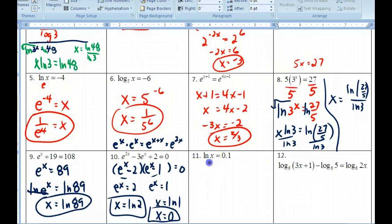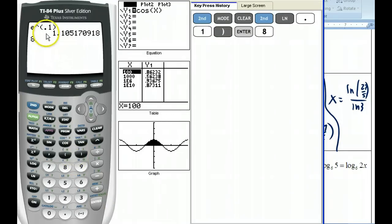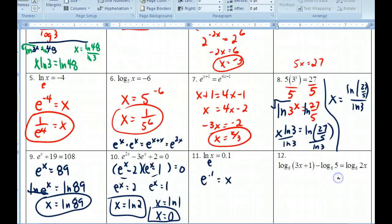This one here, I'm going to rewrite this in exponential form. So this would be e to the 0.1 equals x. You can do that on your calculator. And with e to the 0.1, you get 1.105.